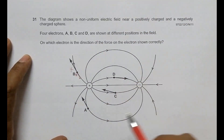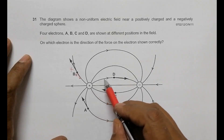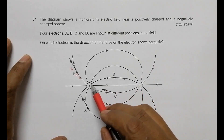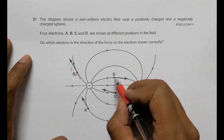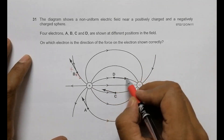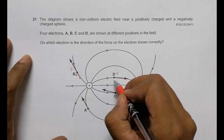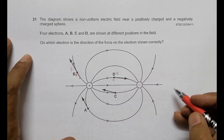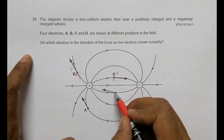For position D, the direction shown represents the force applied on a positive charge particle, not an electron. The force on an electron would be opposite to that shown for a positive charge, so D is also not correct.